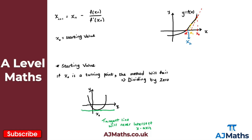The other issue with the starting value being near a turning point is that the first approximation will be very far from the actual root, which in some cases can cause the method to diverge rather than converge. That's everything for our introduction to the Newton-Raphson method. Now let's take a look at a couple of practice questions.